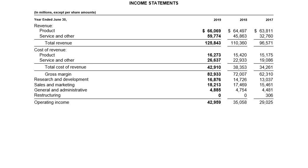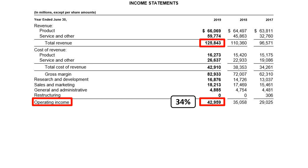This brings us to the next profitability subtotal: operating income. Operating income is revenue minus cost of revenue minus operating expenses, or if you want to start from gross margin, operating income is gross margin minus operating expenses. Microsoft has $43 billion of operating income on $126 billion of revenue. The operating income percentage is 34% — for every $100 of revenue, Microsoft earned $34 in operating income.